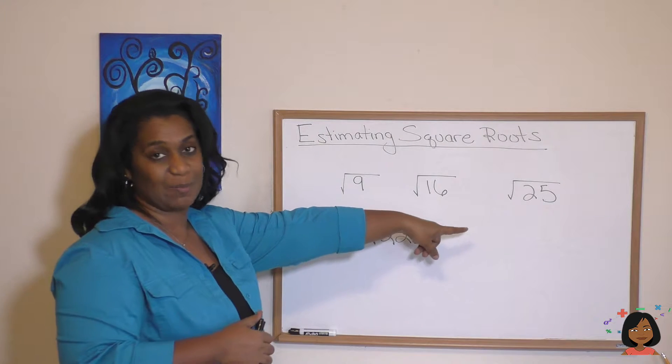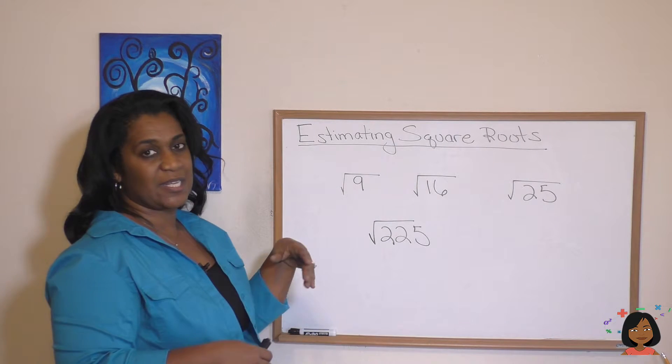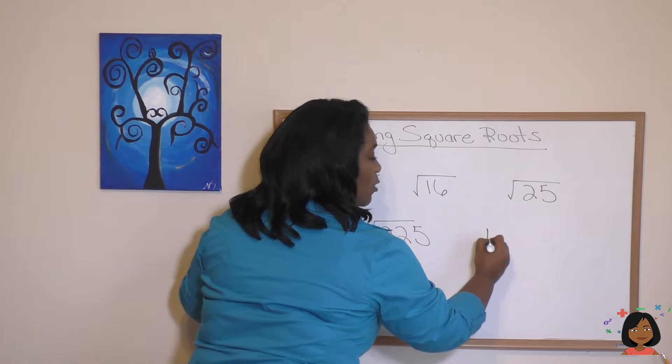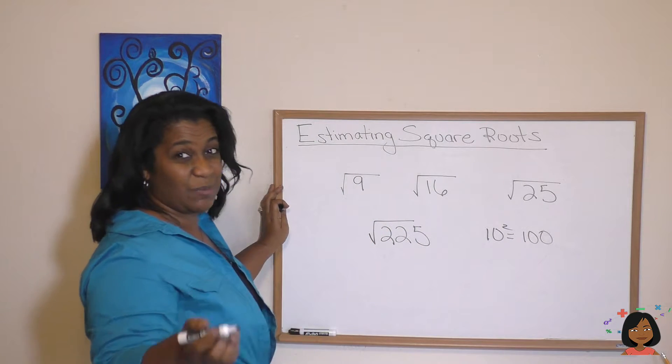So we definitely know it's going to be more than 5 because that's 25. So what if we did 10 times 10? 10 times 10 we know is 100.